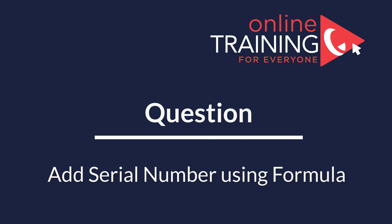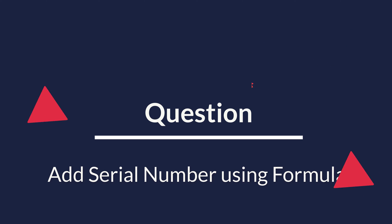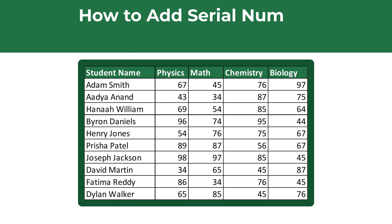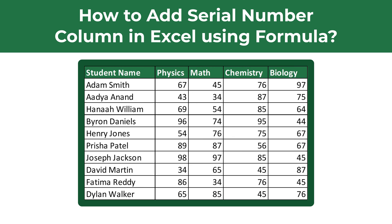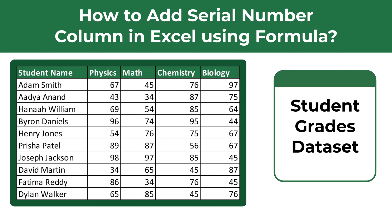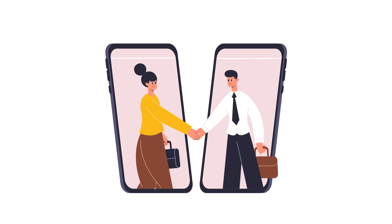Here is an interesting question you frequently see on the test. You're presented with a data set and need to add a serial number column using an Excel formula. In our case we're presented with student grades information, and for each student we need to add a serial number. Give yourself a little time to see if you can complete the steps, and I'm going to move forward and reveal the solution.